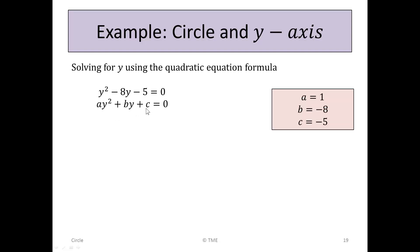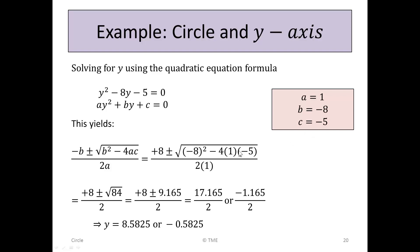ay² + by + c = 0. It's usually written as ax² + bx + c, but any variable will work. So we're going to substitute y² - 8y - 5 for ay² + by + c. So our coefficient in y² is a, or 1. So a is 1, b is -8, and c is -5. This yields using the formula: (-b ± √(b² - 4ac)) / 2a.